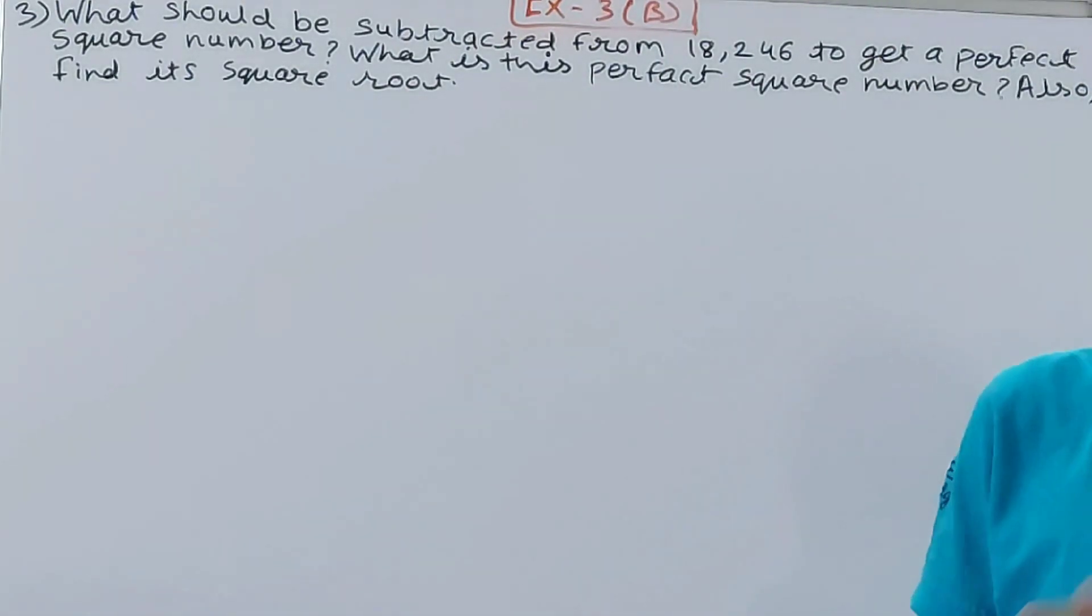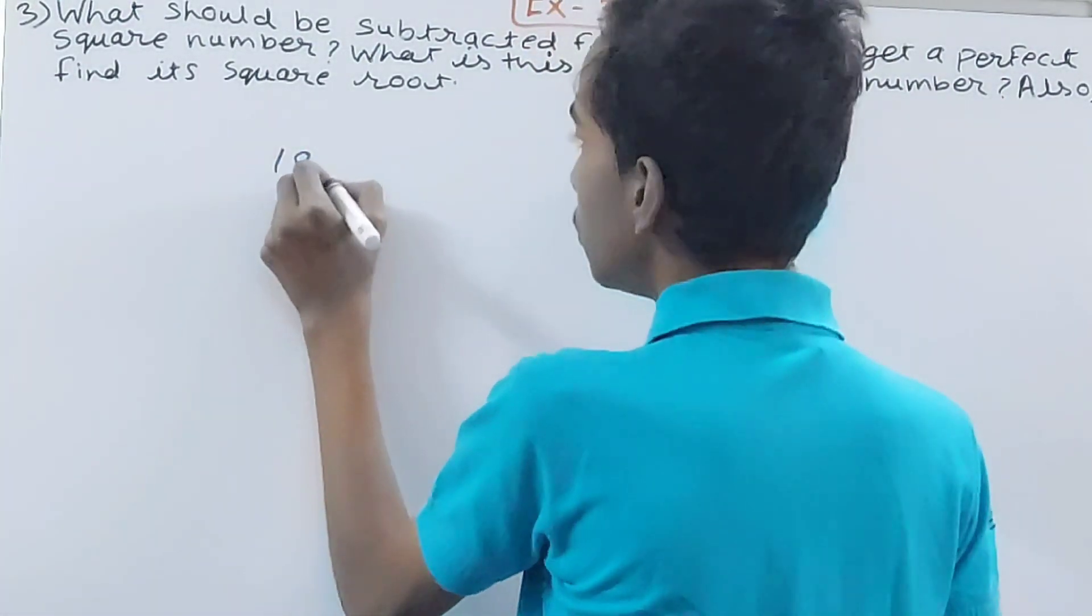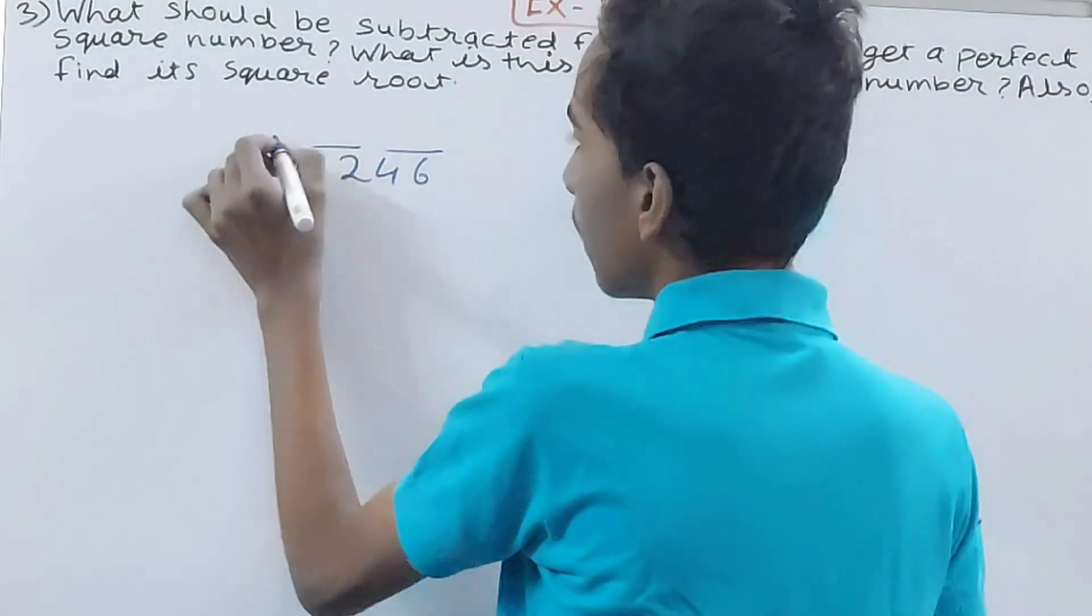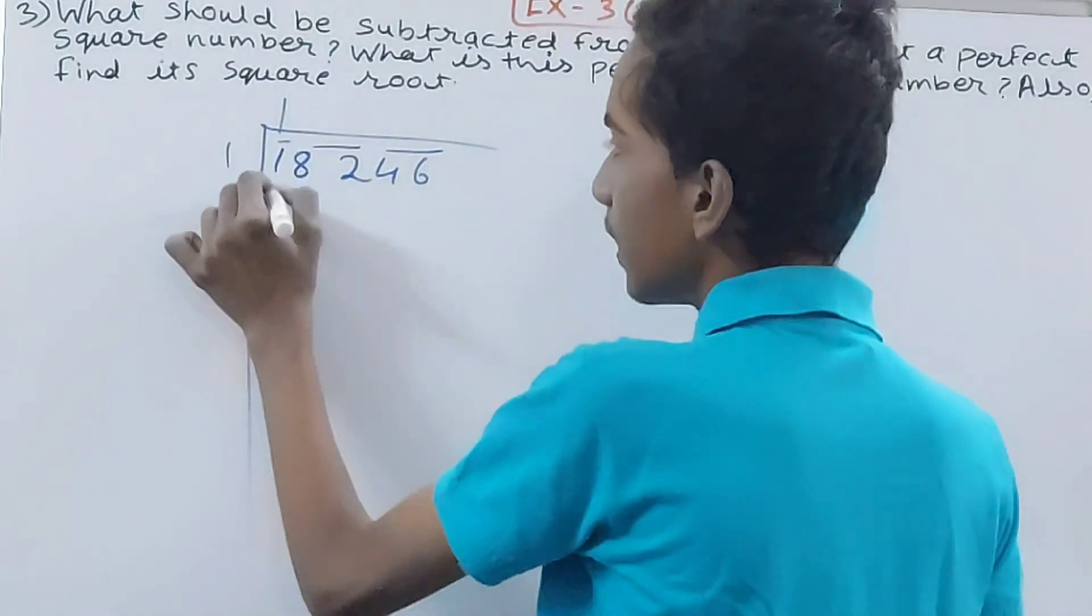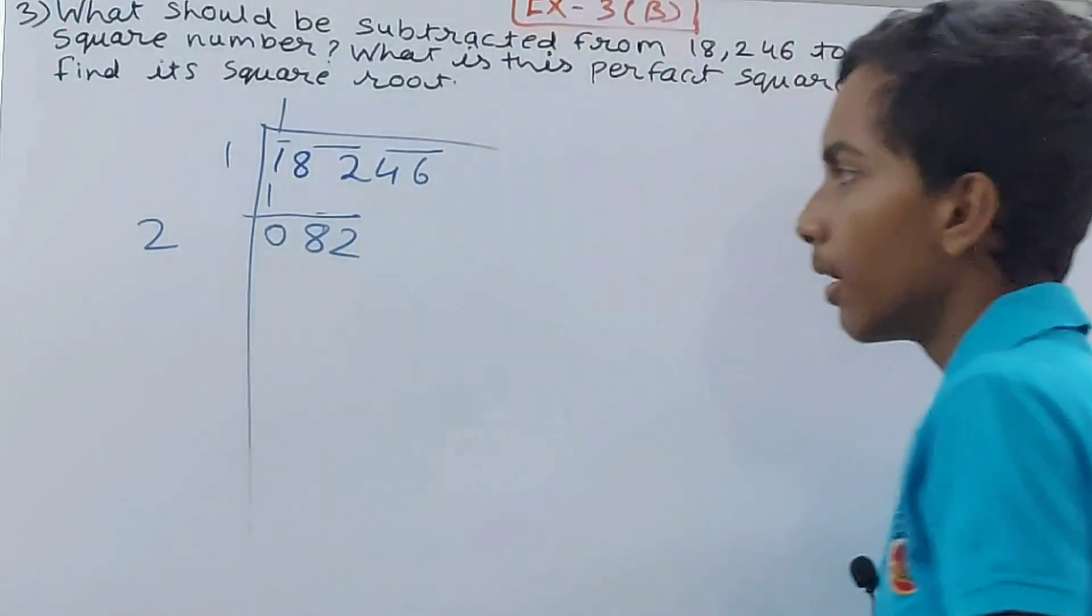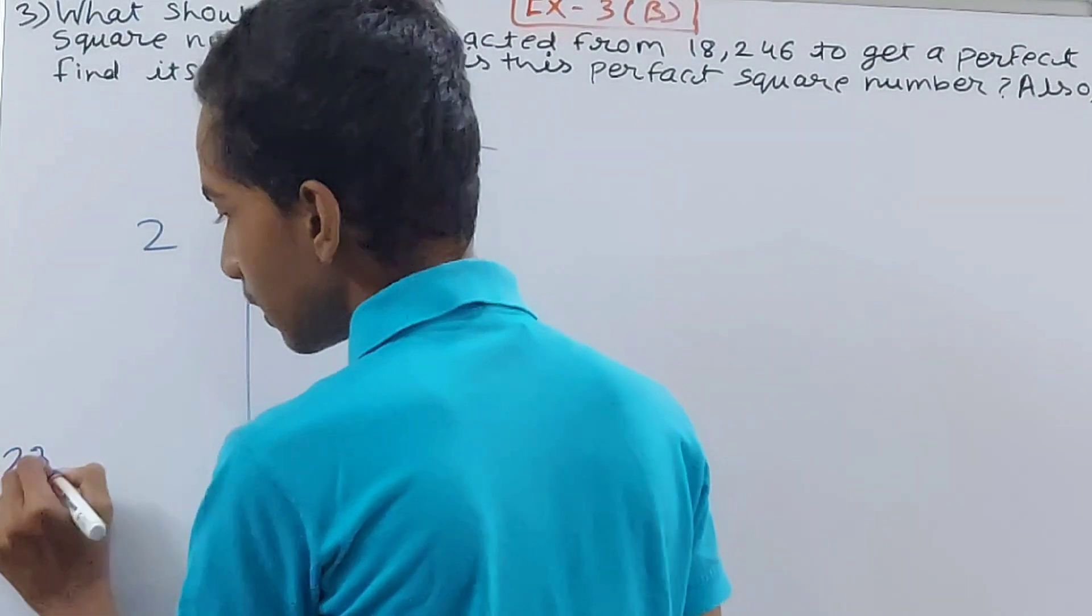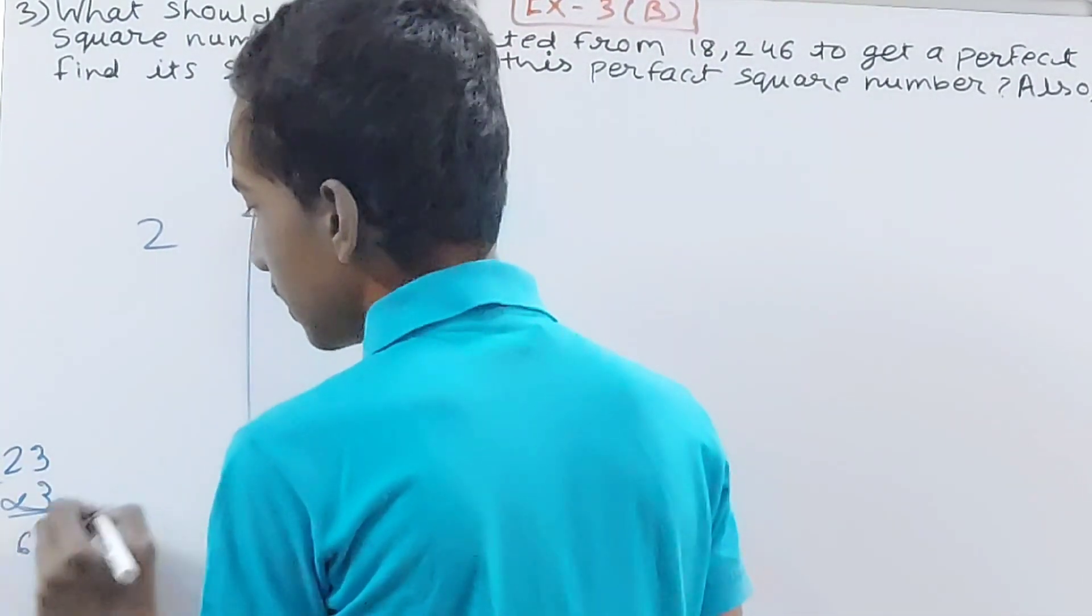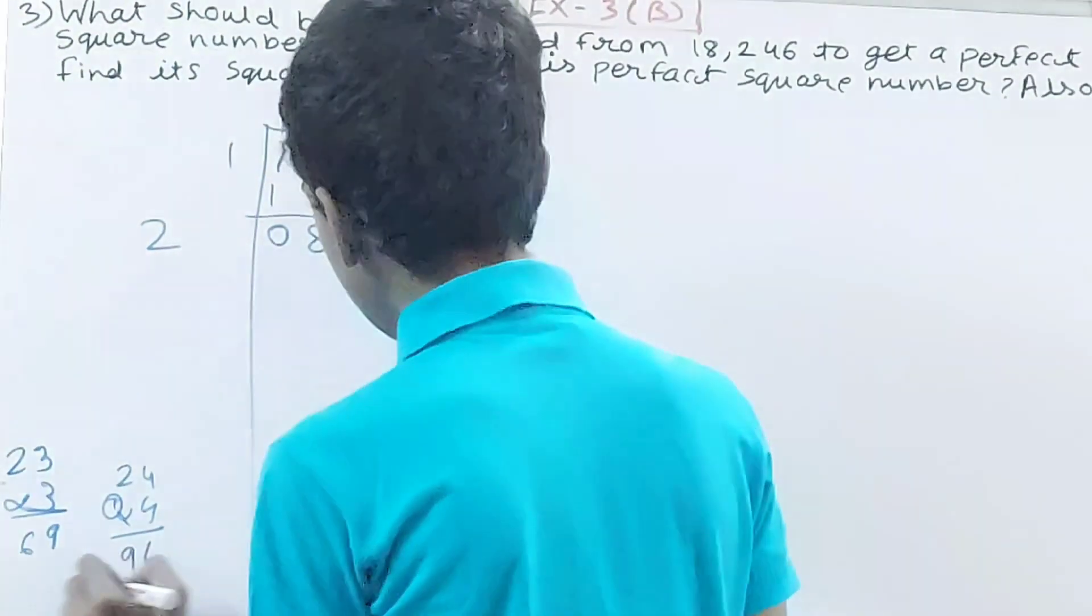So that number that we get in the remainder, that is your answer. It should be subtracted from your number. See, first one is 18,246. Make these pairs, right? Okay, first up is 1—once, of course, one times 1. Now 0, 82 bring here to. Now by which number can we take over here? Let's see, so 23, right? That is 9. 3 squared is 9, and 69, or let's say 24, 16 is 196, which is more. So we will go with 23, right?